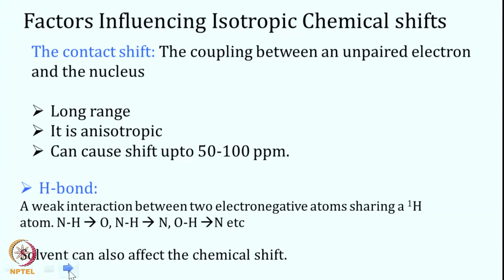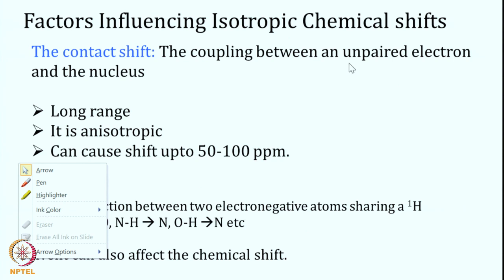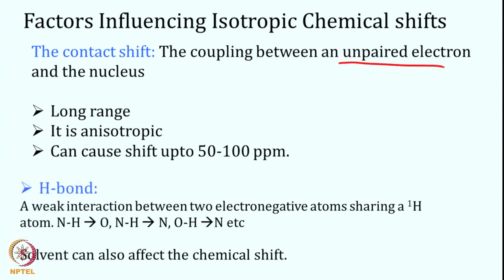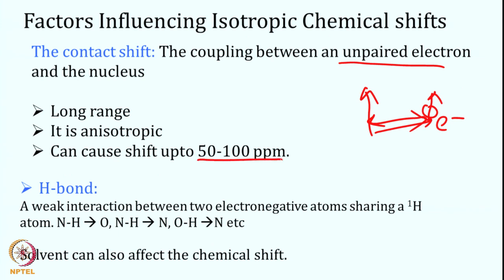The contact shift arises from coupling between an unpaired electron and a nucleus. In solution, if there is an unpaired electron near a nucleus, there is a long-range coupling — sometimes called Fermi contact — which is also isotropic and depends on the angle between the electron and the nucleus. This unpaired electron significantly affects the chemical shift and can shift it by as much as 50 to 100 ppm, making it one of the major factors influencing chemical shift.